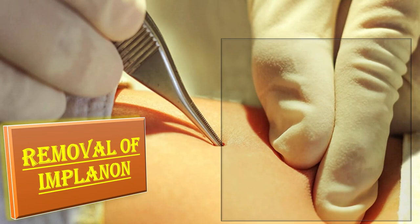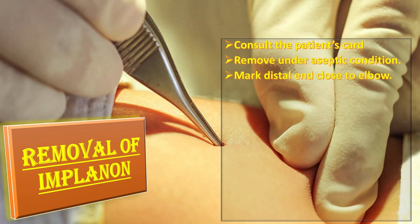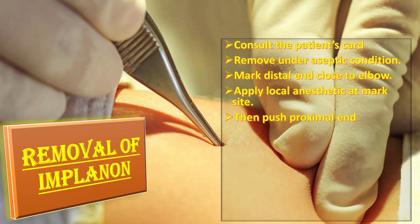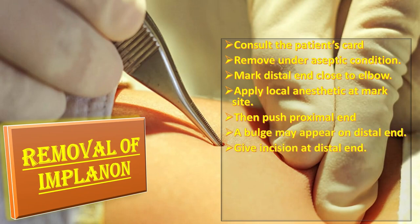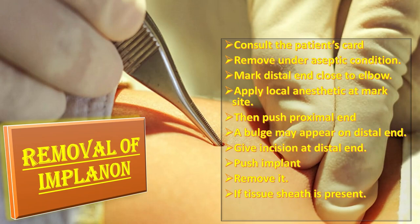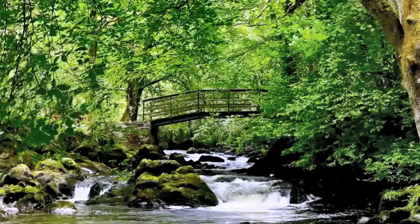For removal of Implanon when the patient wishes: consult the patient's card for the location and palpate to verify its presence. Remove under aseptic conditions. Mark the distal end close to the elbow, apply local anesthetic at the marked site, then push the proximal end to stabilize it. A bulge may appear at the distal end. Make an incision at the distal end and push Implanon toward the incision until the tip is visible. Grasp it with forceps and remove it. If a tissue sheath is present, cut the sheath and remove Implanon only by forceps, then apply pressure dressing.